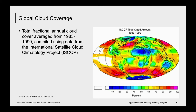This slide shows the advantage of having a sensor like radar that can observe the Earth's surface regardless of cloud cover. The figure shows total fractional annual cloud cover averaged from 1983 to 1990, with colors indicating the percentage of time there is cloud coverage. Some areas of the world are constantly covered by clouds, such as tropical regions, and it is in areas like these that radar is an ideal sensor.